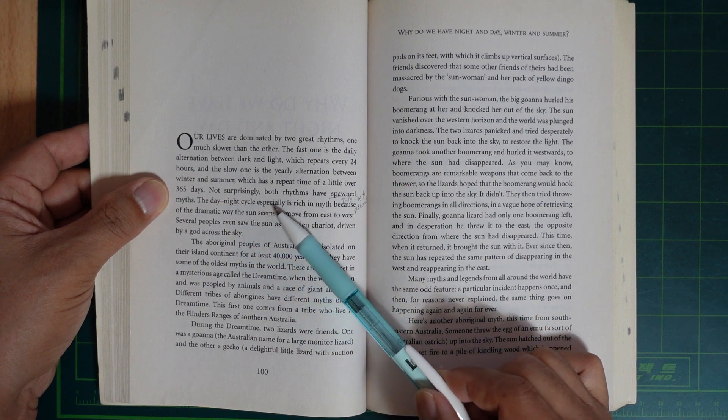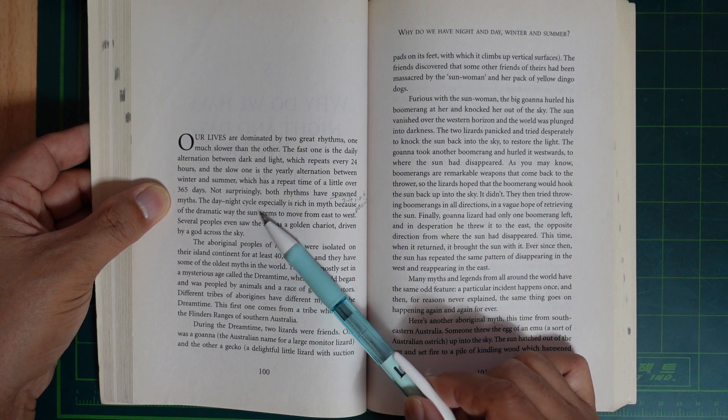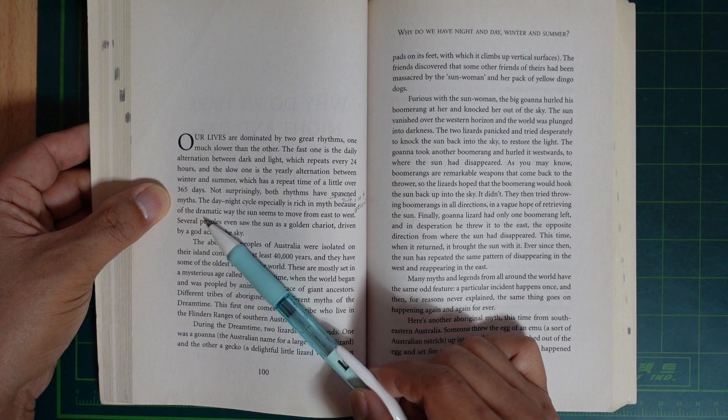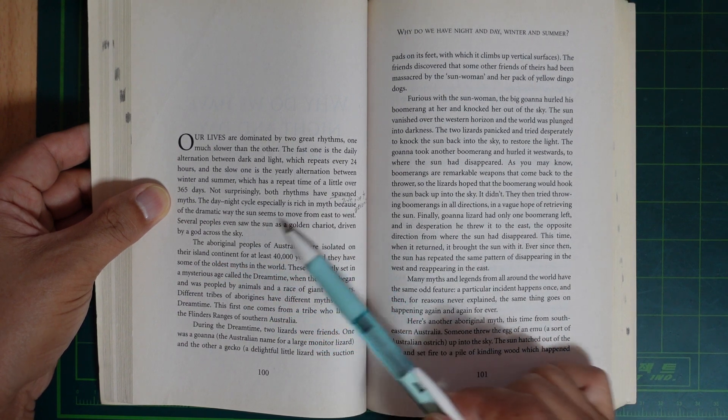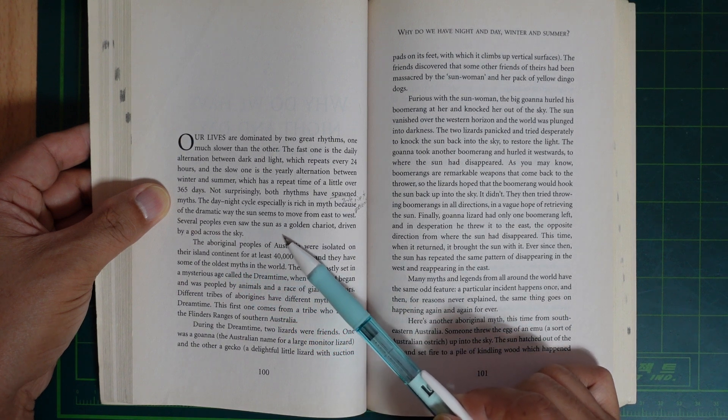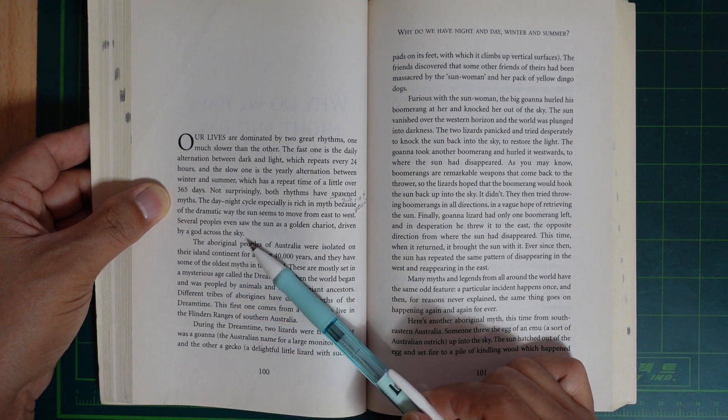Now surprisingly these rhythms have spawned myths. The day-night cycle especially is rich in myths because of the dramatic way the sun seemed to move from east to west. Several peoples even saw the sun as a golden chariot driven by a god across the sky.